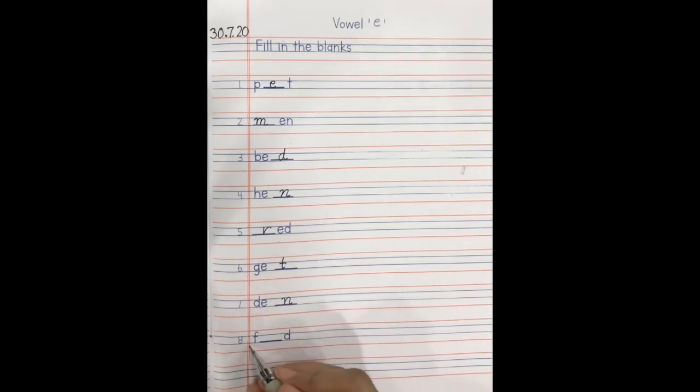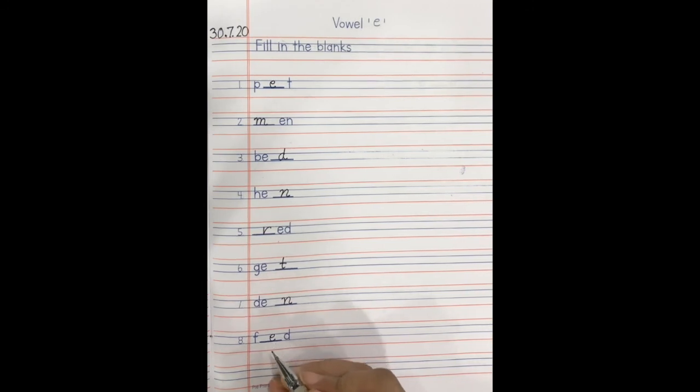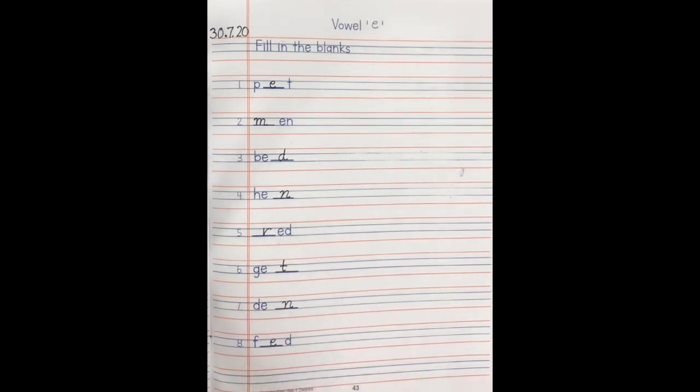Number 8: p_t — the answer is 'pet'. Children, they are all 'e' vowel words.